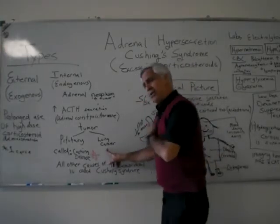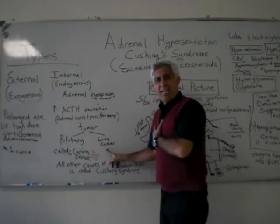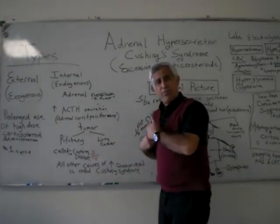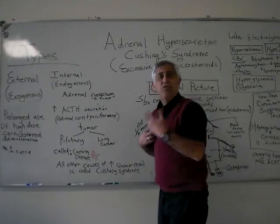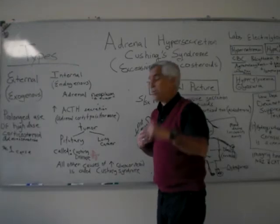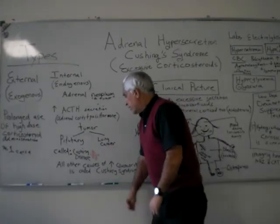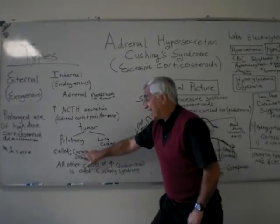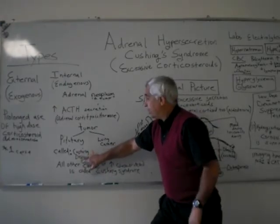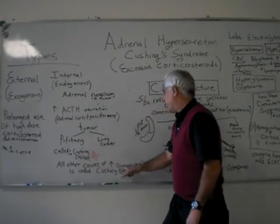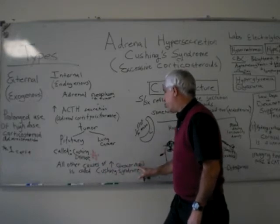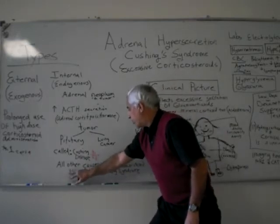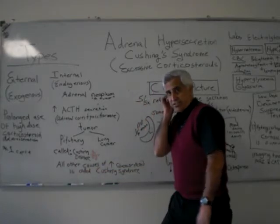Also, lung cancer — weird — you've got cancer in the lung and it's secreting ACTH, not from the pituitary, but from a tumor right there. It could even be the pancreas. All other causes besides Cushing's Disease — all other causes of increased glucocorticoid — are called Cushing's Syndrome.